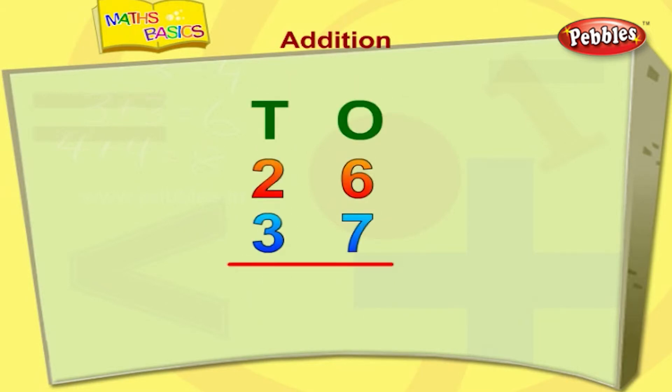We shall now learn to add bigger numbers. When we add ones column first, we get 6 plus 7 is equal to 13. Here, ones digit is 3 and tenths digit is 1.